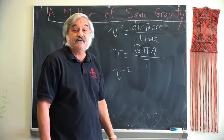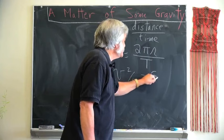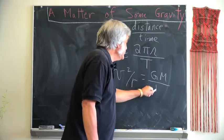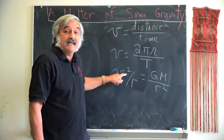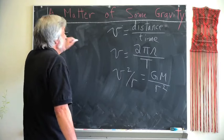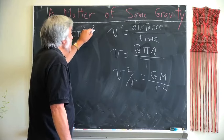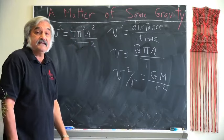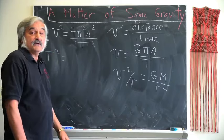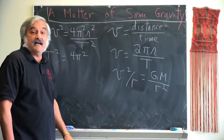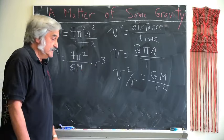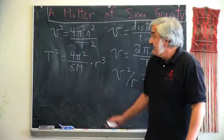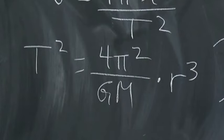Now, since we know, once again, that v squared over r is equal to gm over r squared, we can substitute this expression for v here, and we get, of course, v squared is going to be given by 4 pi squared r squared over t squared. So we end up with t squared equaling 4 pi squared over gm times r cubed. Or, in words, the square of the period is proportional to the cube of the radius of the orbit.